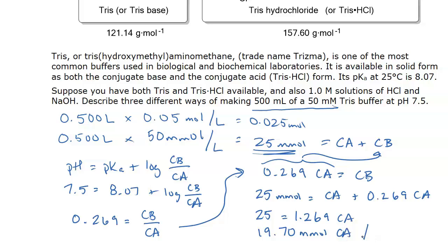So how much conjugate base? Well, they have to sum up to 25. So just take 25 and subtract that last amount. And you get 5.30 millimoles of conjugate base. That math is going to be the same for all three methods of making the buffer. You need to, however you make the buffer, you need to end up with this ratio.